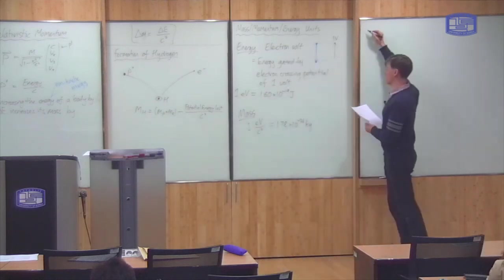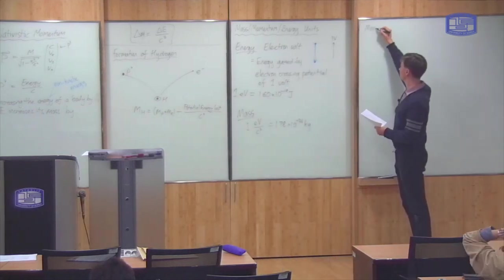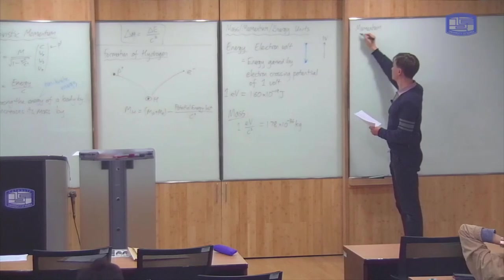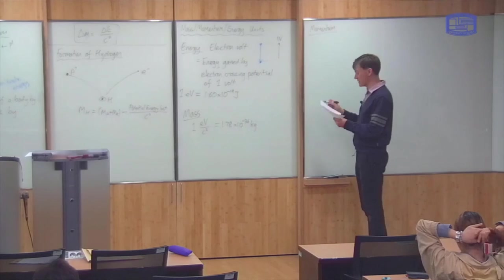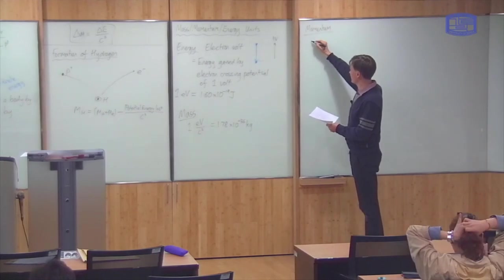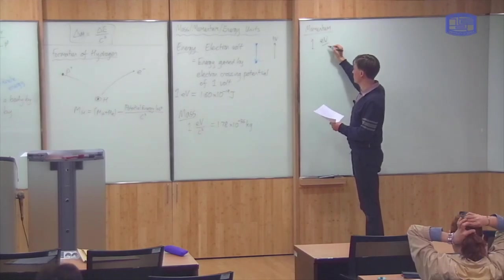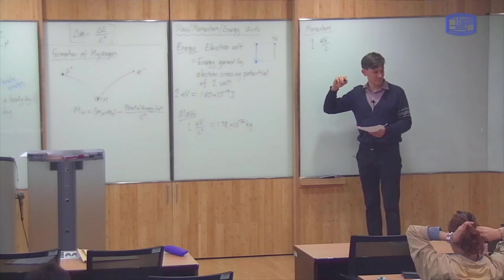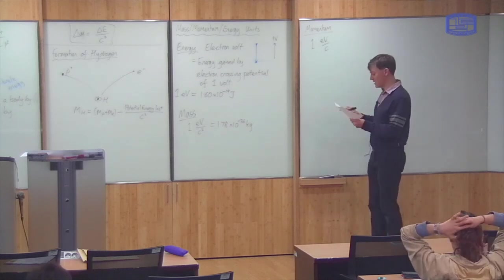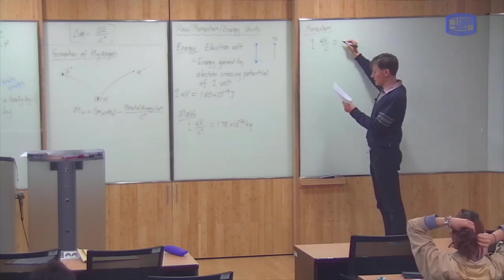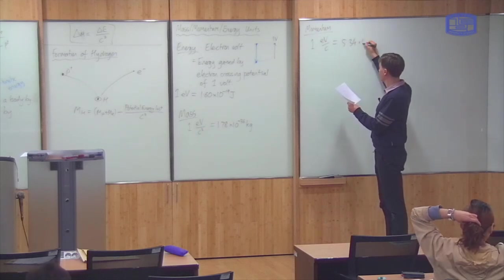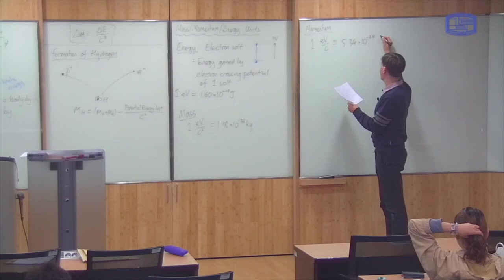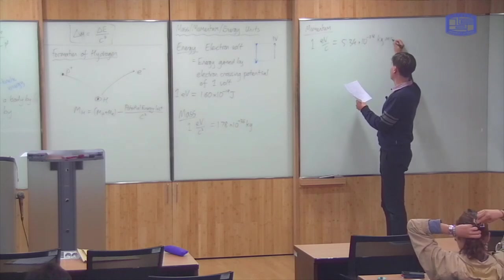And finally, units of momentum. Momentum units are mass times speed units. So, therefore, you measure them in electron volts over c. And this, in terms of the SI units, is 5.34 times 10 to the minus 28 kilogram meters per second.